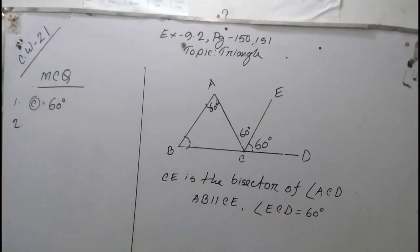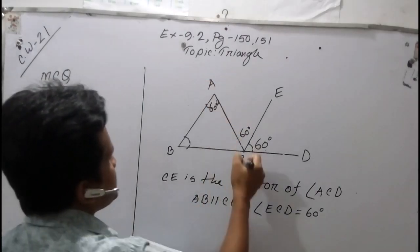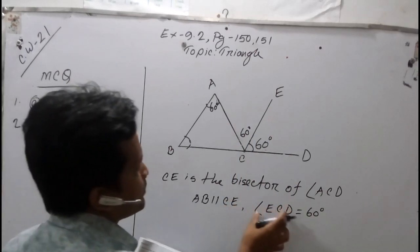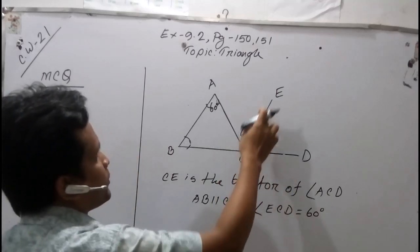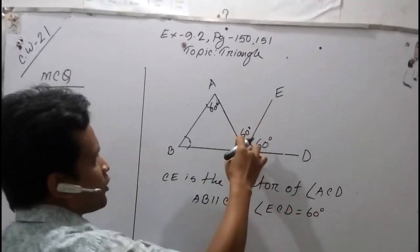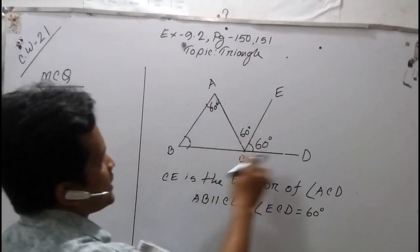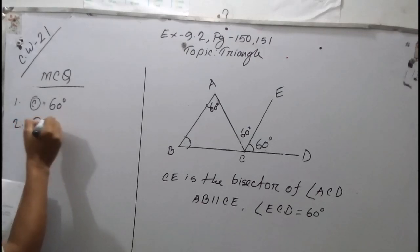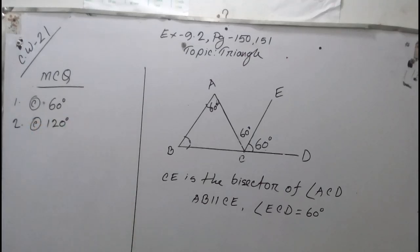Question two asks for the total measure of angle ACD. Since CE is the bisector of angle ACD, both parts are equal — angle ECD is 60 degrees and angle ACE is 60 degrees. So 60 plus 60 equals 120 degrees. Therefore angle ACD equals 120 degrees. Answer: option C, 120 degrees.